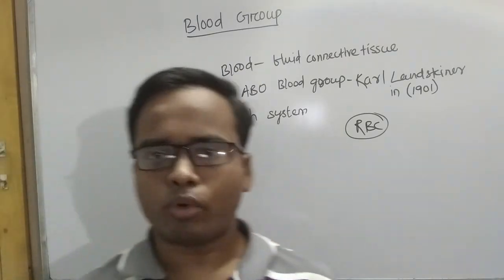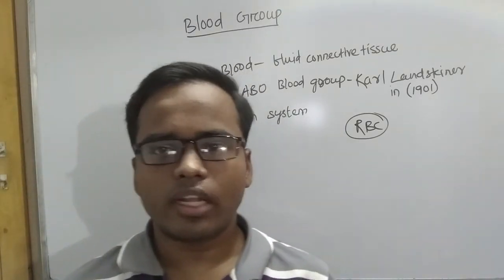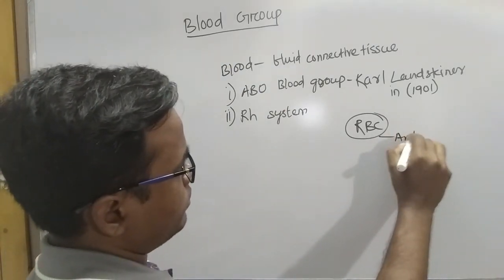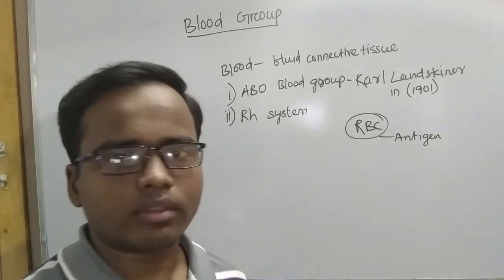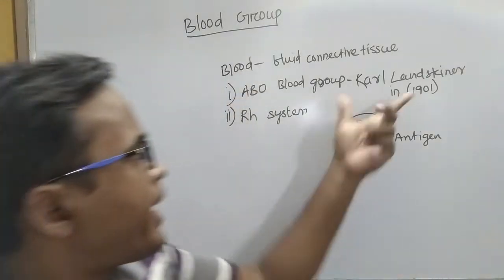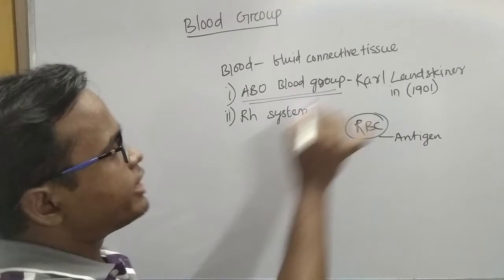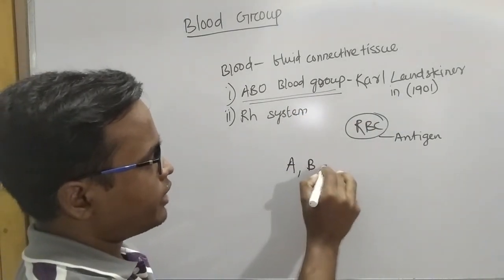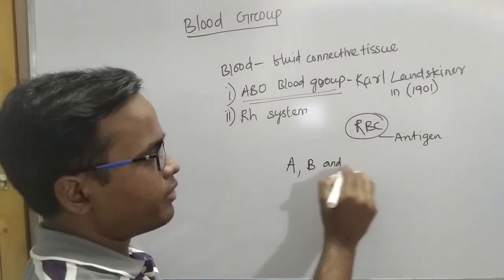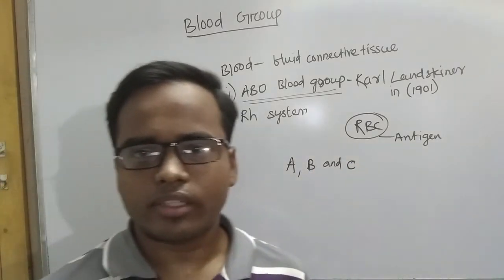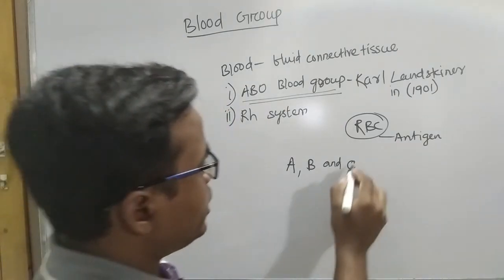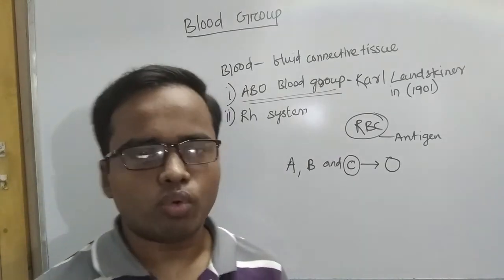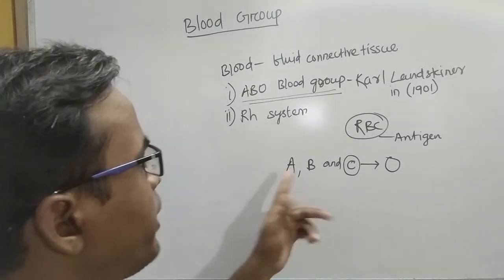RBCs contain a protein called an antigen. Karl Landsteiner in the ABO blood group system discovered three types of blood group: A, B, and C. Later, the C blood group was converted into O, so the three types became A, B, and O.